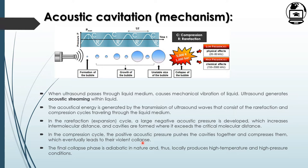Minor bubbles form during the acoustic pressure cycle, and during violent collapse, finer sized bubbles or cavities are formed. This final collapse phase is adiabatic in nature and, as a result, locally produces high temperature and high pressure conditions. This is how acoustic cavitation occurs.